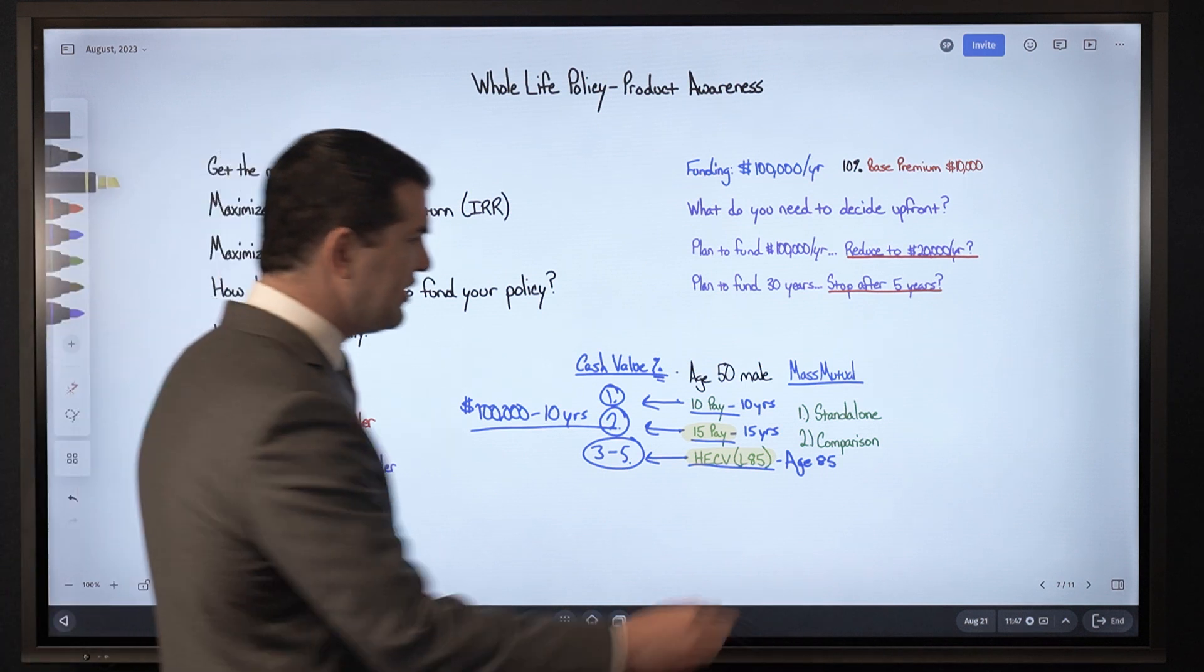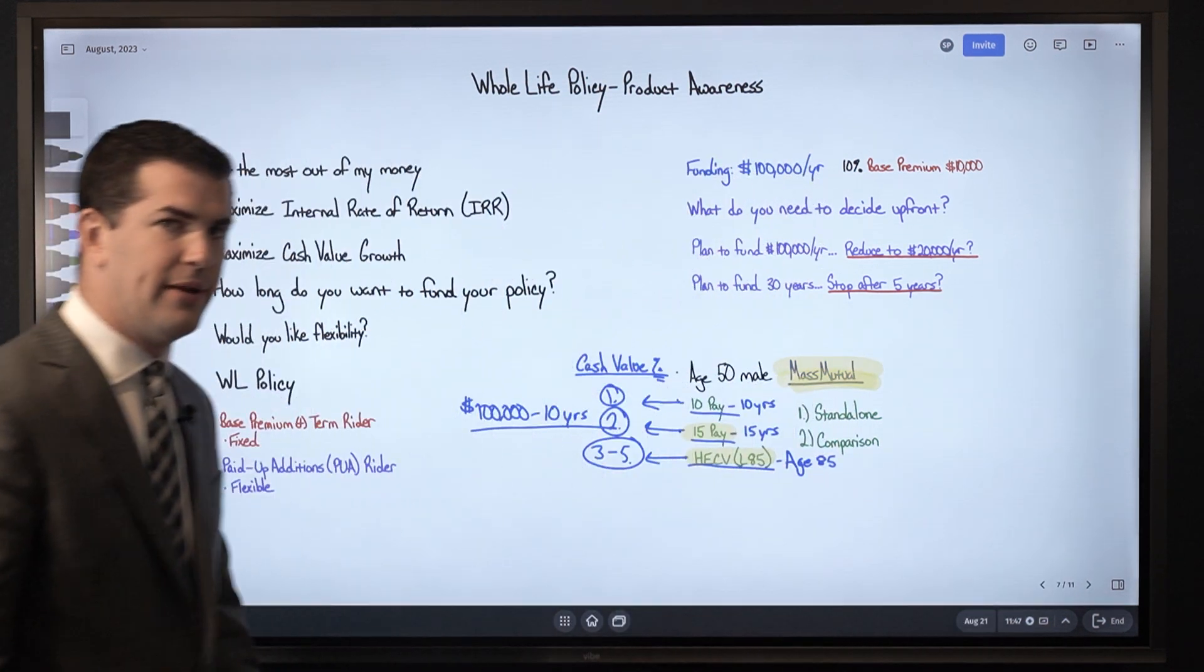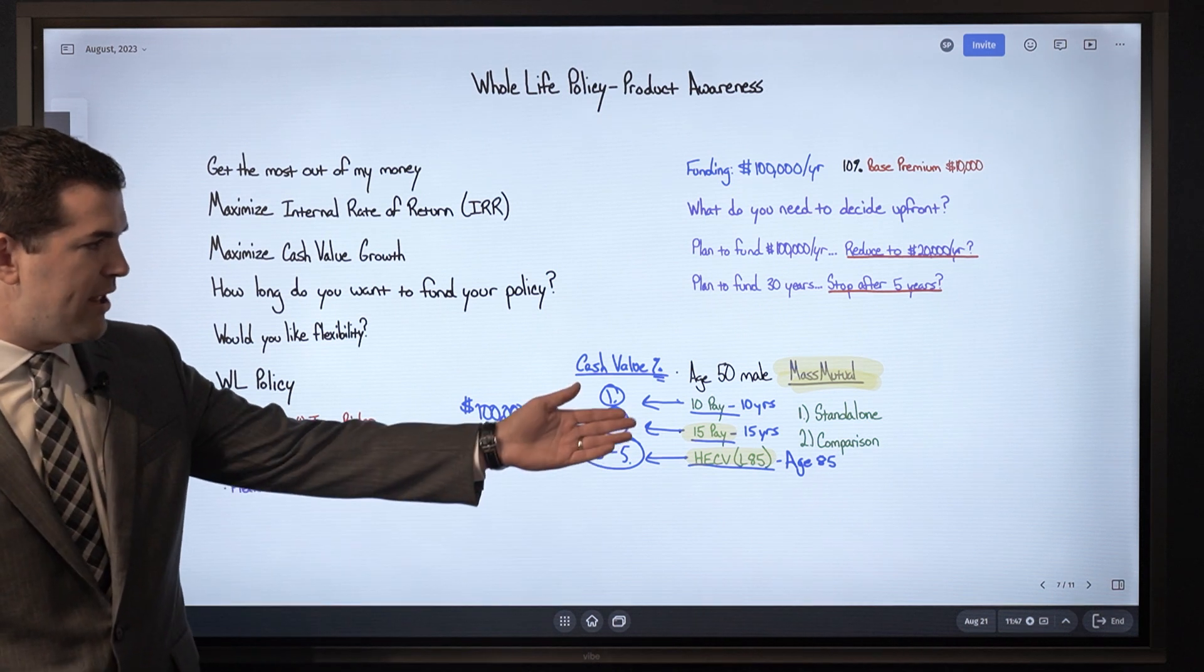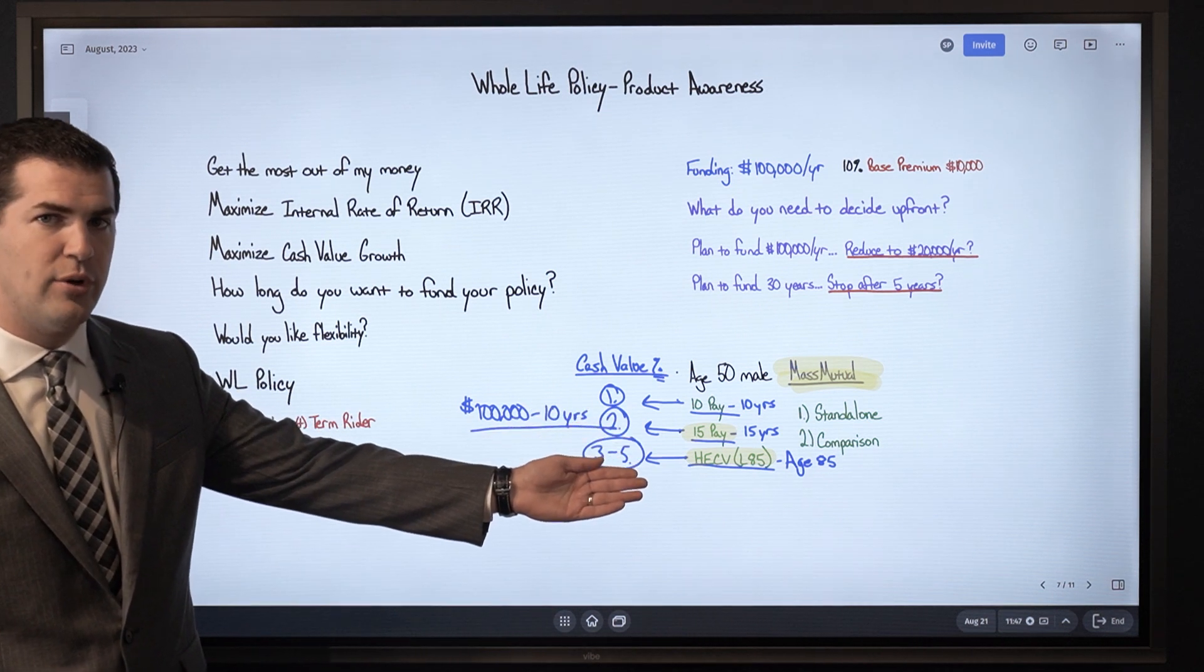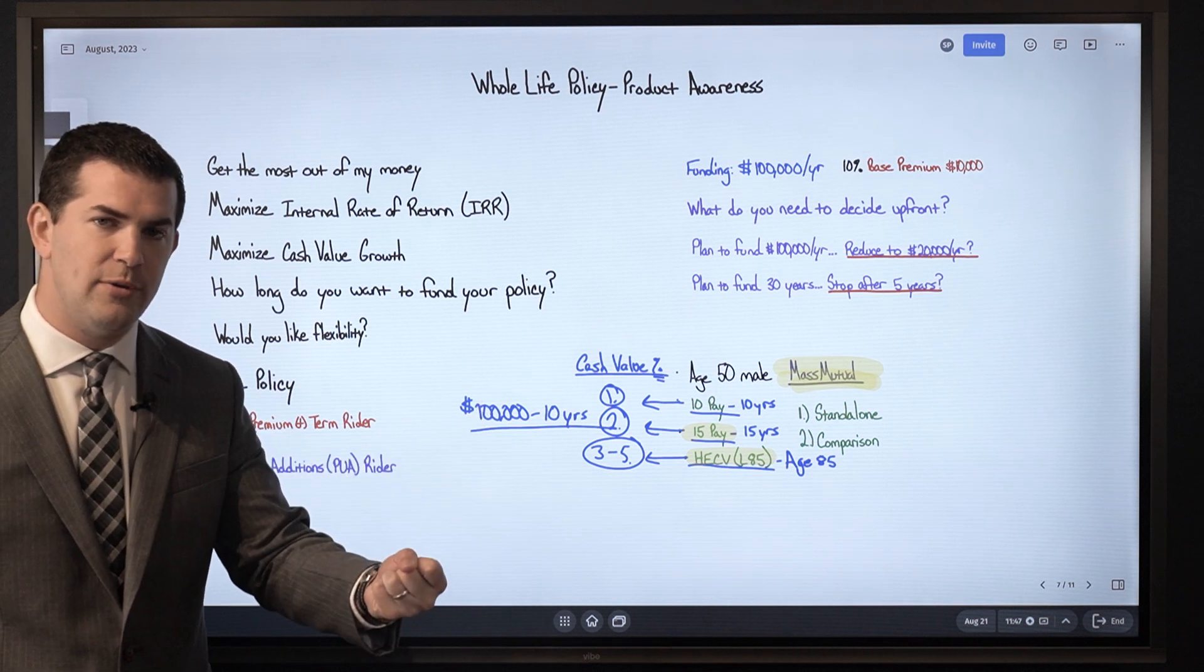So again, if I'm focusing here on one company - we often look at more than one company, but here if I knew that MassMutual is the company I want to go with and I'm looking at the different products - I'm very interested in strong cash accumulation,